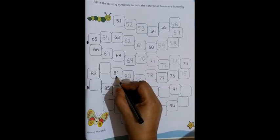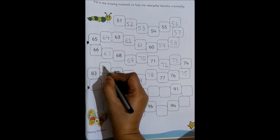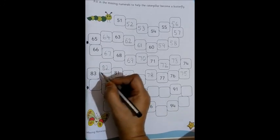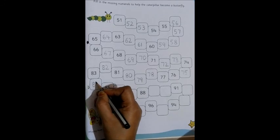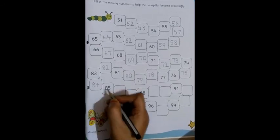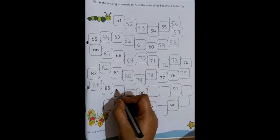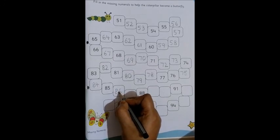After 80 we have 81. Then what will come? 82. 83 is there. Then which one will come? 84. 85 is there. What will come? 86.